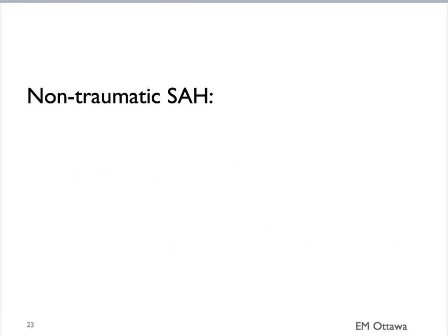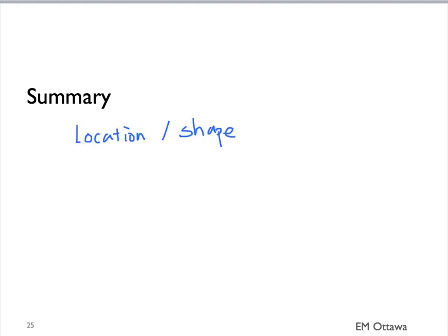To diagnose a non-traumatic subarachnoid hemorrhage, either the patient would have a positive CT scan, or if the initial CT scan is negative, a positive LP. In summary, we discussed the CT findings of patients with intracranial bleed. Based on the kind of bleed, the location and the shape would be different. We also talked about the limitations of CT scan based on the age of the bleeding and the amount of bleeding, and how we might want to do a lumbar puncture in patients with subarachnoid bleed when the CT scan is negative.